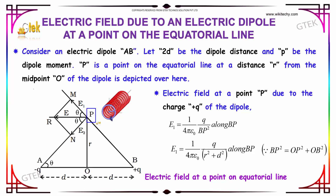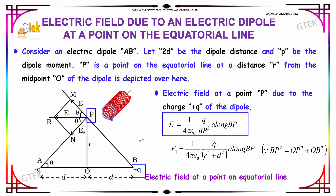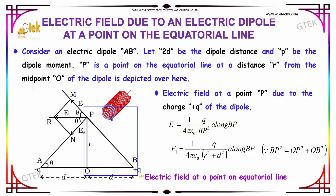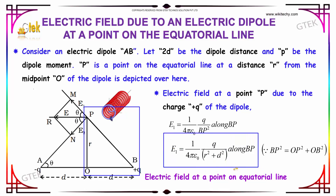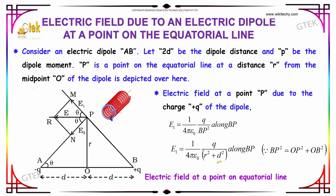The electric field at point P due to the charge +Q of the dipole is given by E1 equal to 1 divided by 4π epsilon-naught, Q divided by BP squared, along BP. Since this is a right-angle triangle, we apply the Pythagorean theorem: BP squared equals OP squared plus OB squared, giving R squared plus D squared. So E1 equals 1 over 4π epsilon-naught, Q divided by R squared plus D squared.